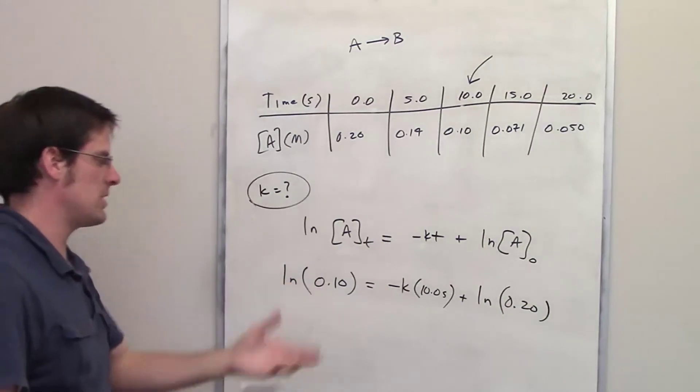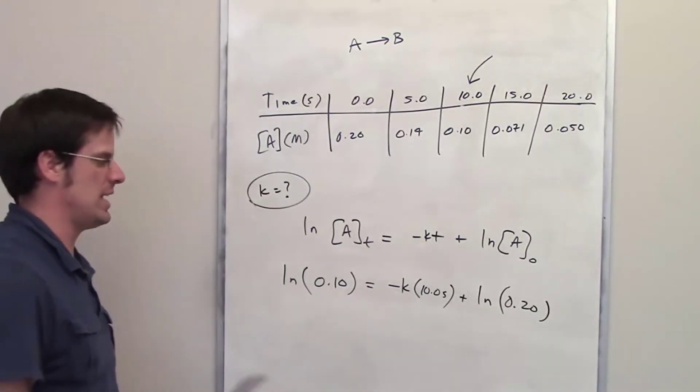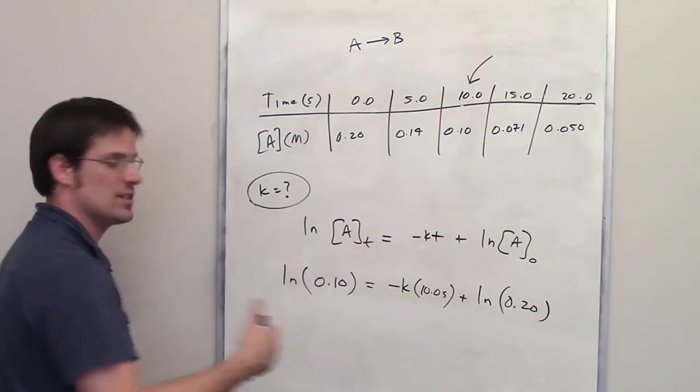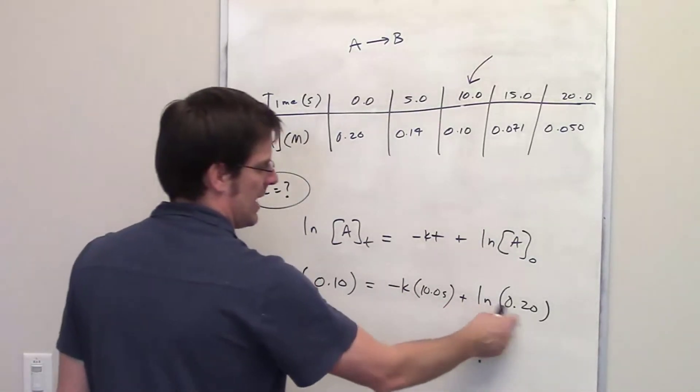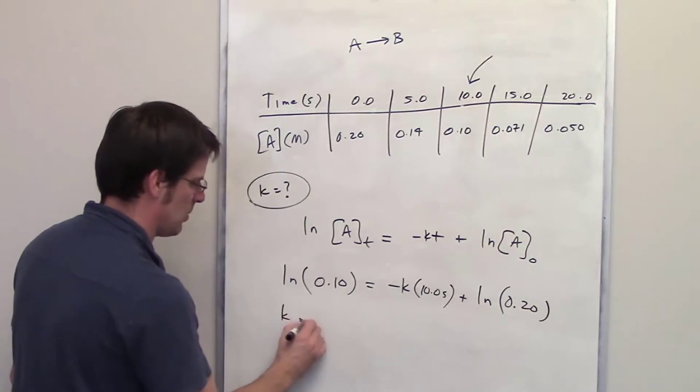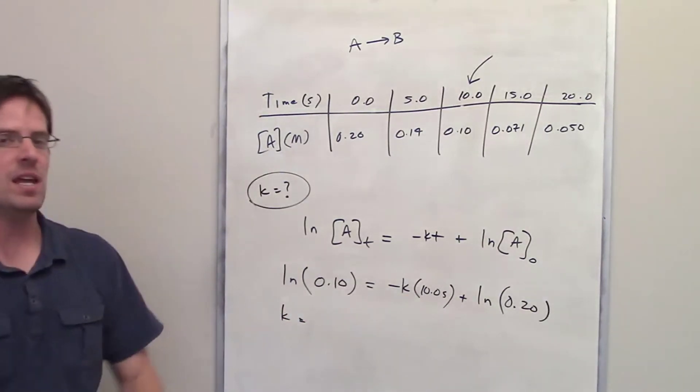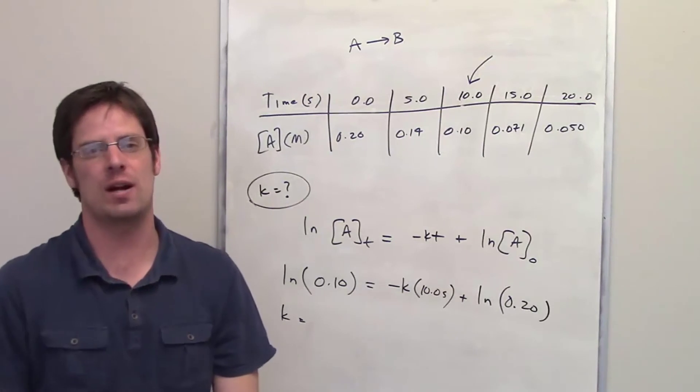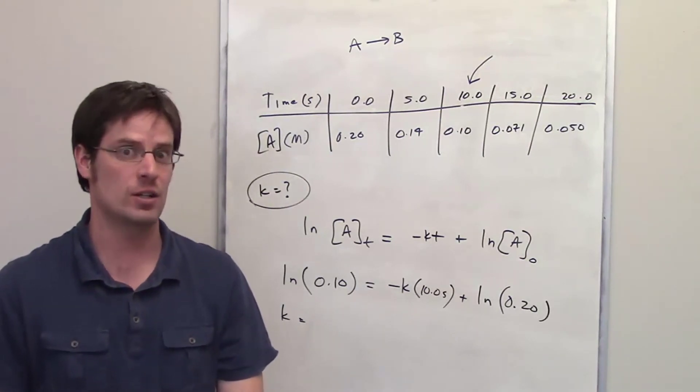So this is pretty much it. You can throw in all of these values into your calculator. Determine what the ln of 0.1 is. It should spit out a number. Determine what the ln of 0.2 is. Spit out a number. And then use algebra to get k on one side and everything else on the other. If you do that all right, then hip hop hooray, you should get the correct answer. I'll let you do that on your own.